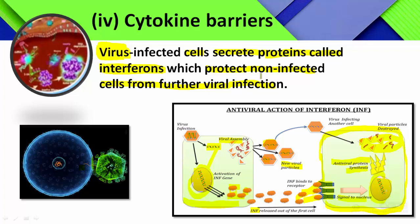Cellular barriers are represented by WBCs: neutrophils, natural killers, and macrophages. Cytokine barriers are secreted by virus-infected body cells — they are antiviral proteins that protect the non-infected cells from further viral infection. This is the complete explanation with respect to innate immunity. Hope this explanation is clear for you.